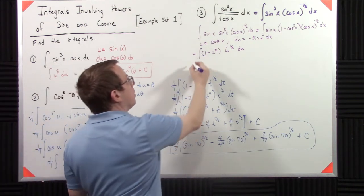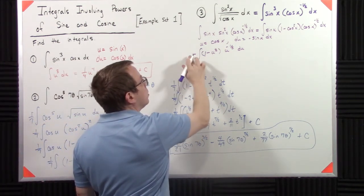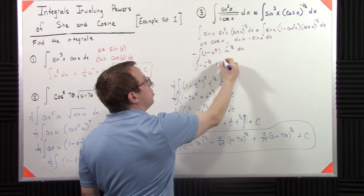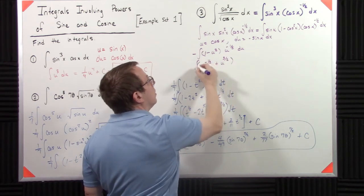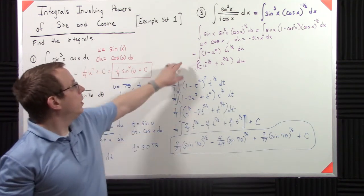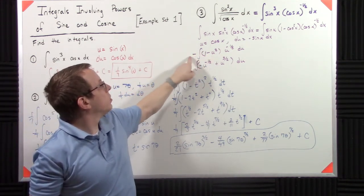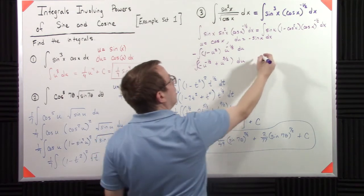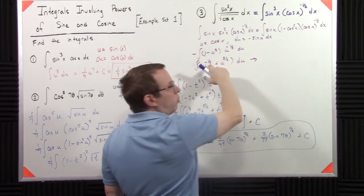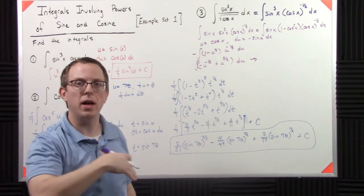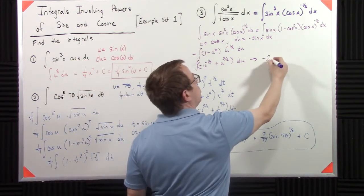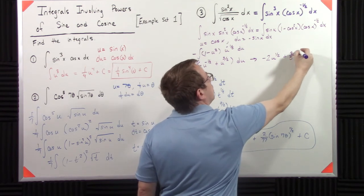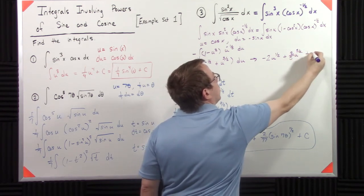Then when I distribute that, I'm going to pull in the negative as well. I'm going to get negative u to the negative one-half plus u to the positive three-halves du. That distributes to get the negative one-half. The negatives cancel. Two minus a half is three-halves. So, then we can apply the power rule. We add one to the power. So, that's going to get us a positive one-half. When we divide by that, it's kind of like multiplying by two. So, I get negative two u to the one-half plus two-fifths u to the five-halves plus c.